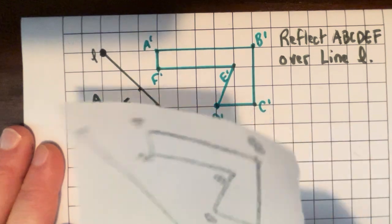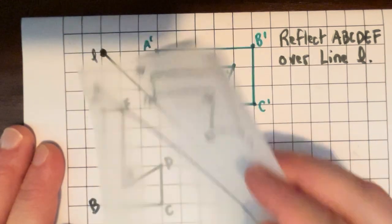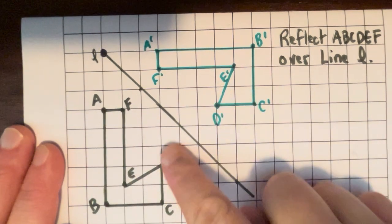So that's a quick instructions on how to draw the reflection of a shape in a line using tracing paper.